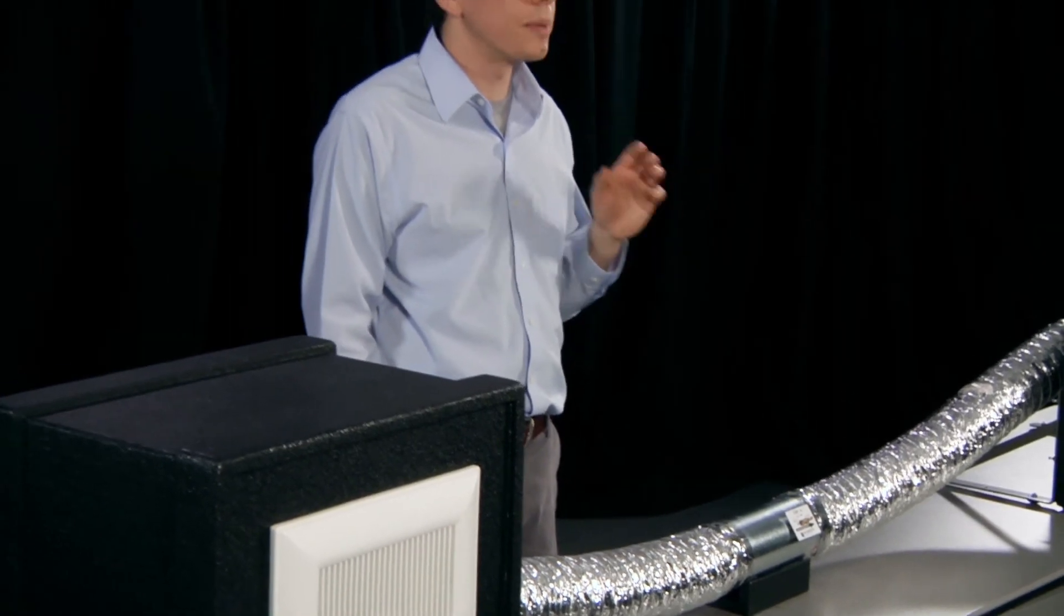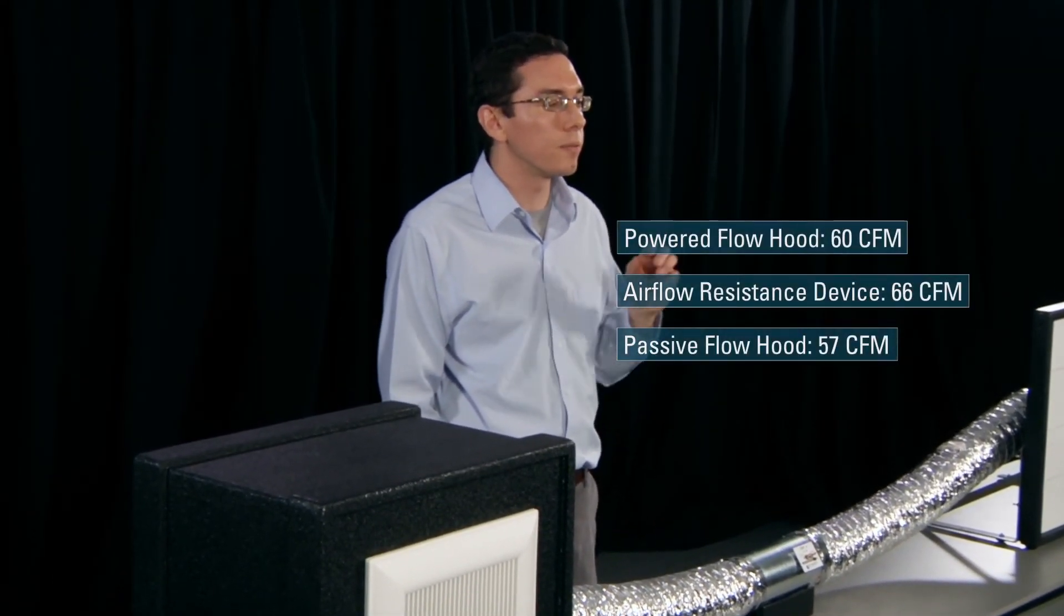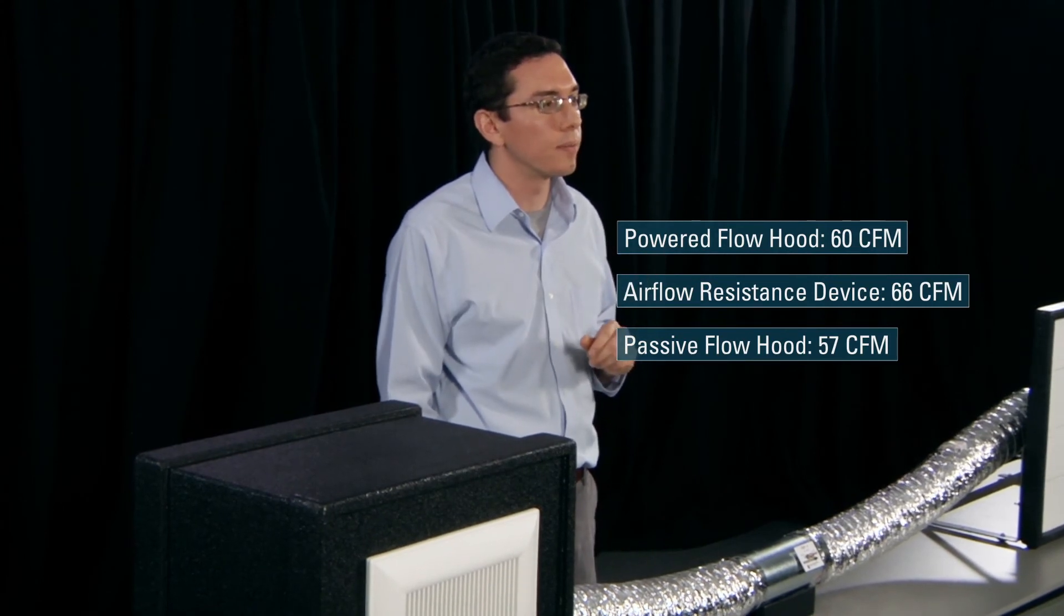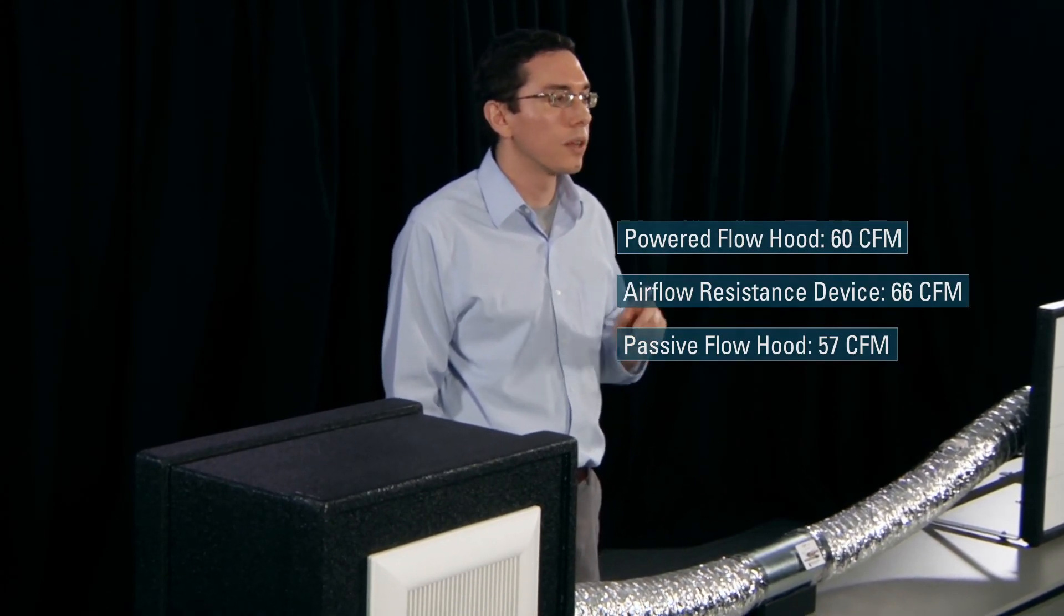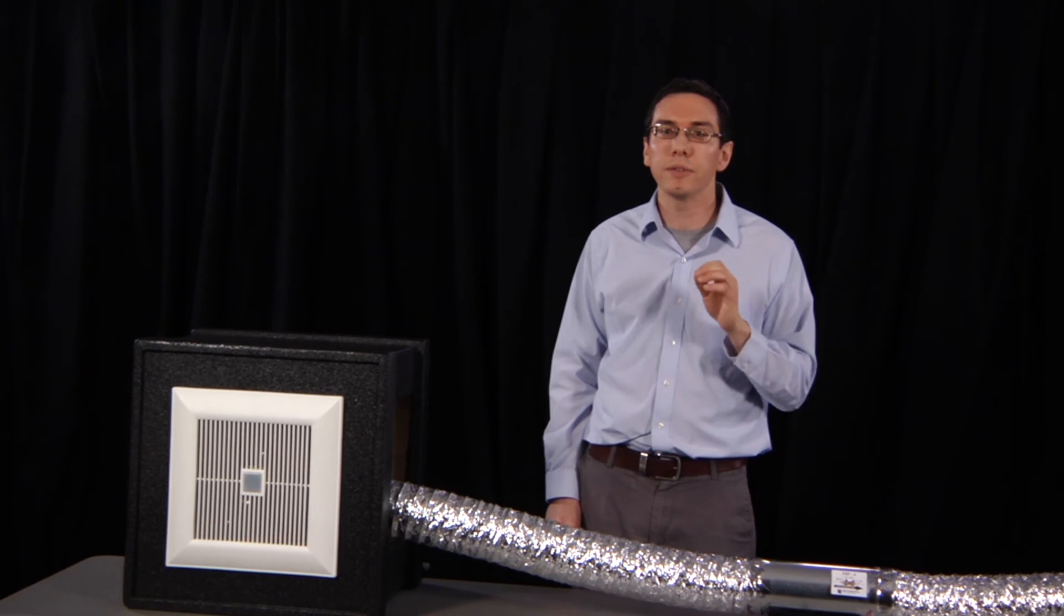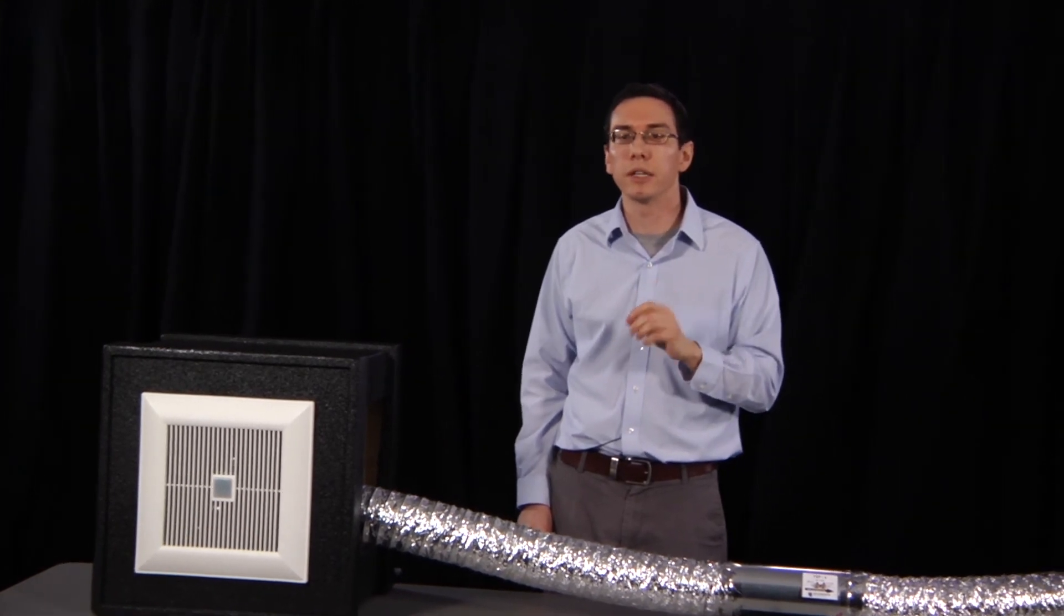There you have it. Three ways to measure the ventilation airflow at the inlet terminal, with results ranging from 57 to 66 CFM. All pretty close. ResNet's new standard allows any of these three devices to be used by the radar at this location. Let's move on to the third video to see how to measure airflow at the outlet terminal.